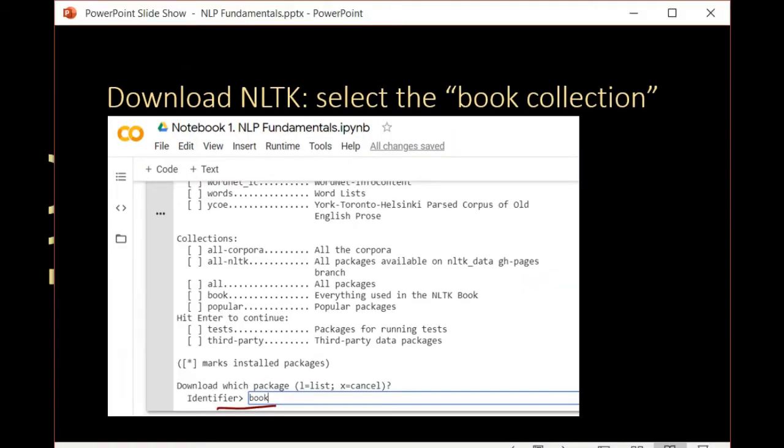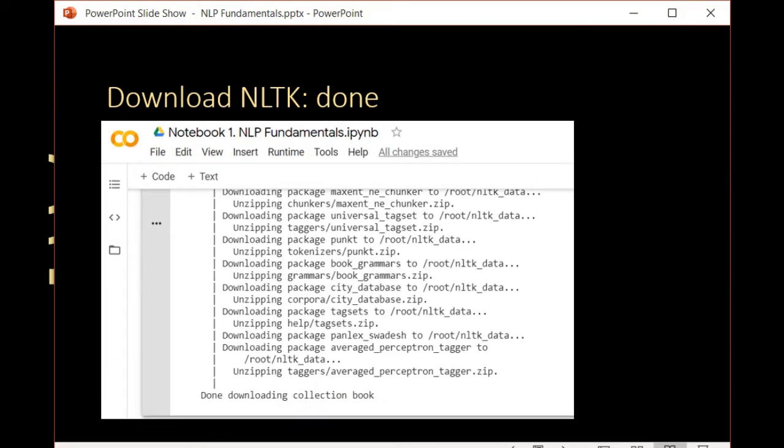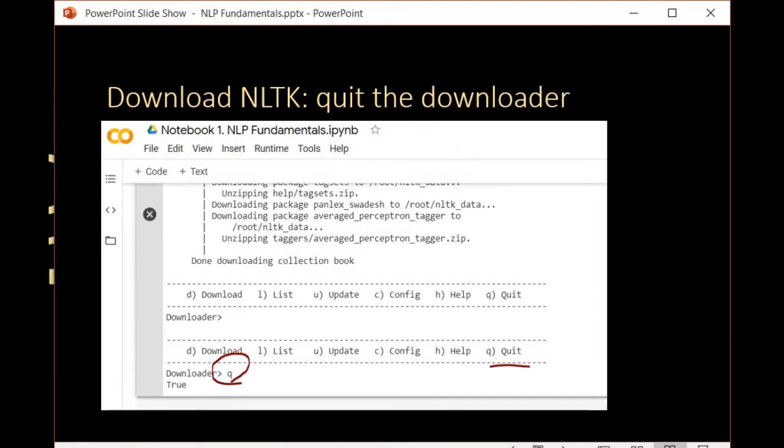Then, at the identifier box, type book to download the book collection. It will notify you when downloading is finished. Finally, at the downloader box, type Q and press enter to quit the downloader.